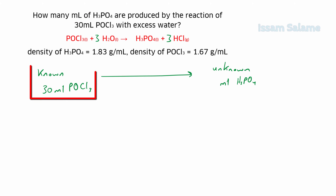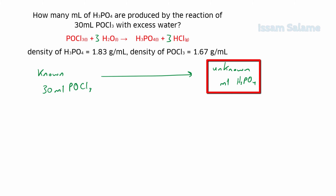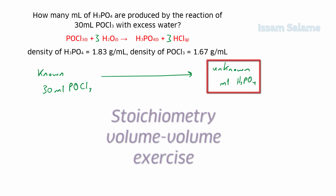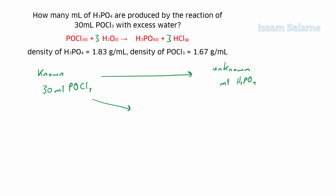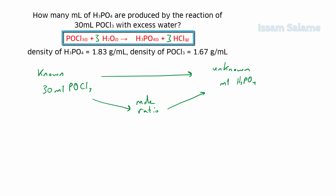Since we started with a volume and the amount we want to calculate is also a volume, this is called a stoichiometry volume-volume exercise. We can relate the known with the unknown quantities only by using the mole ratio, which can be taken from the balanced chemical equation.